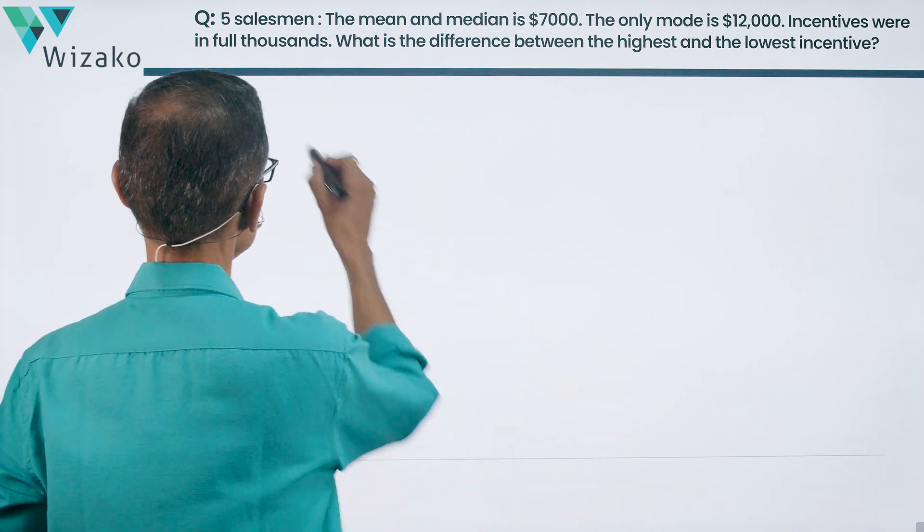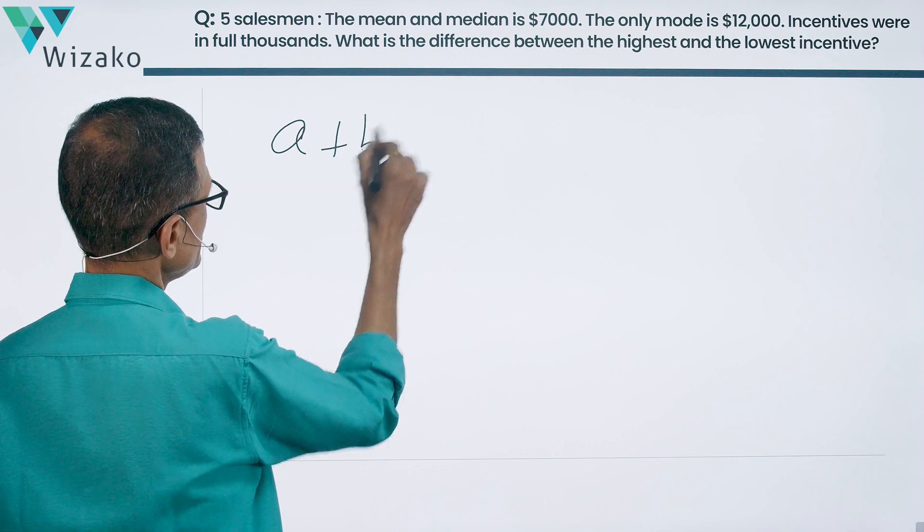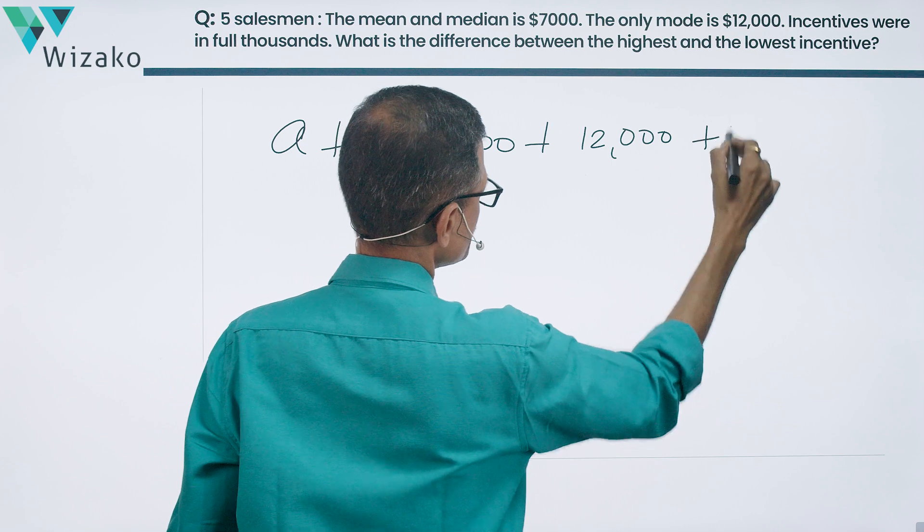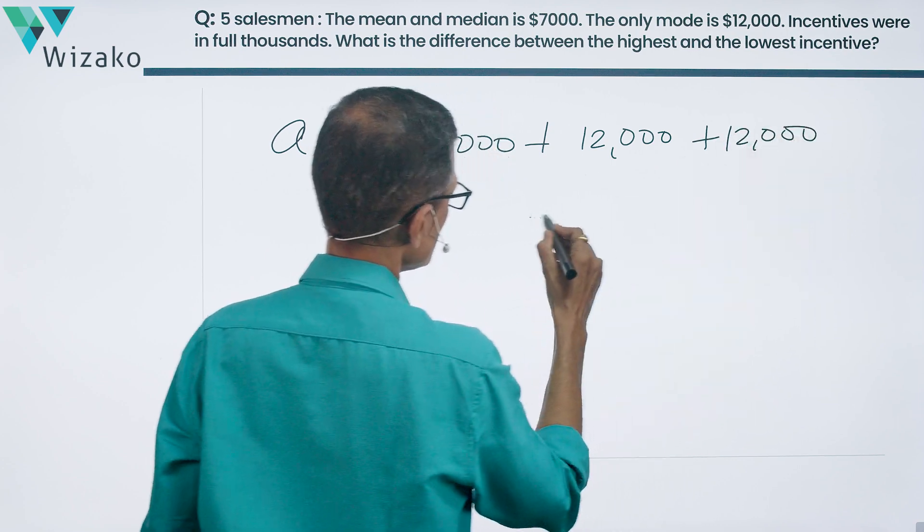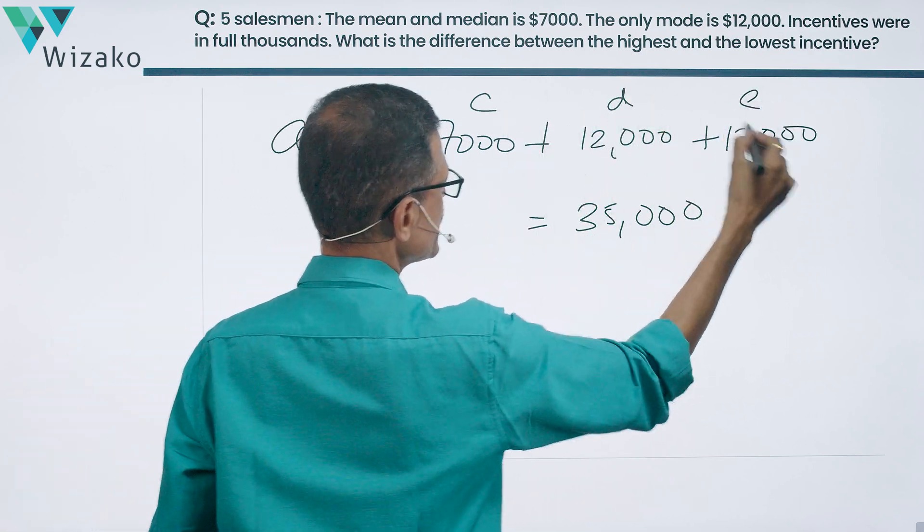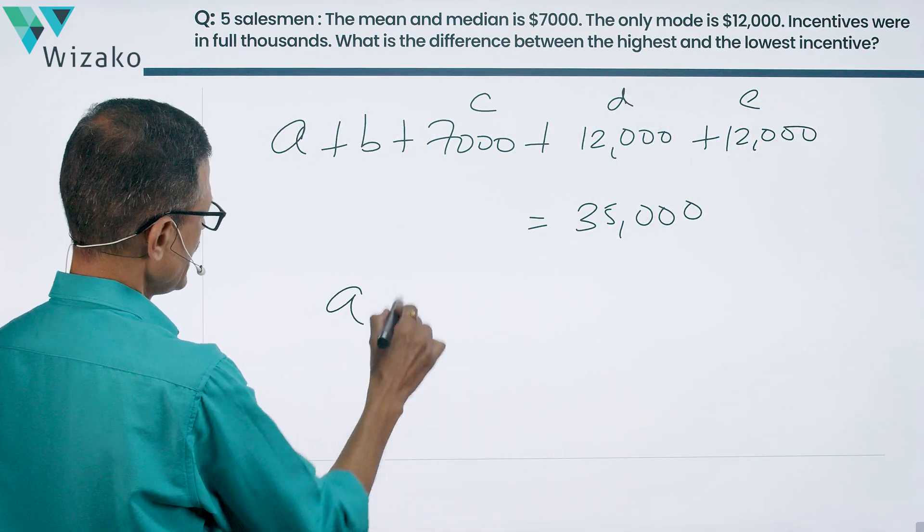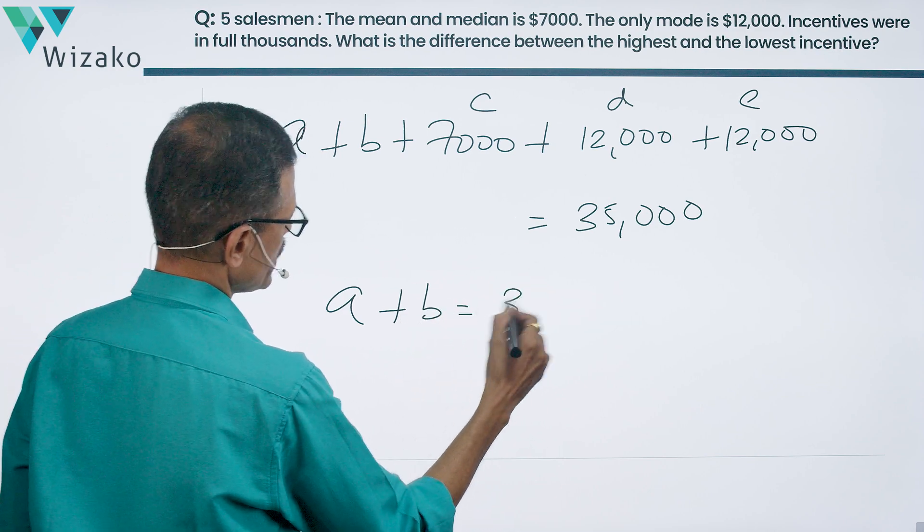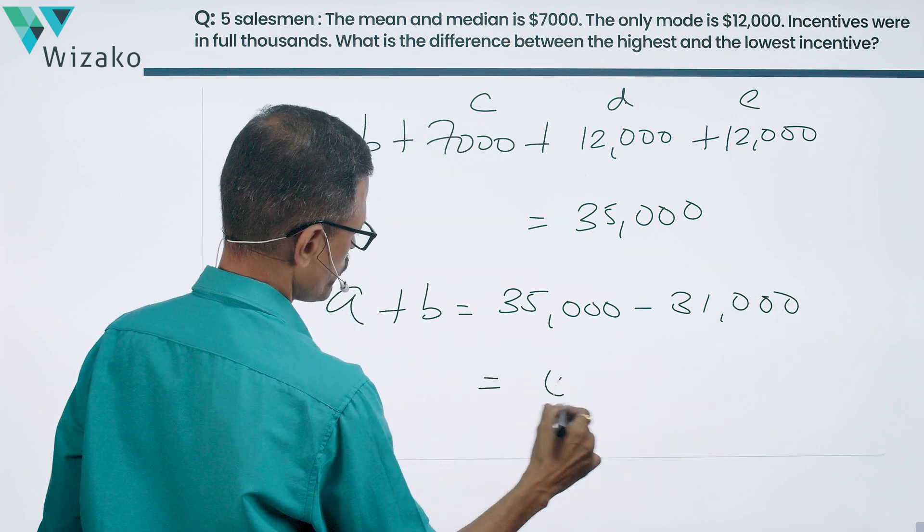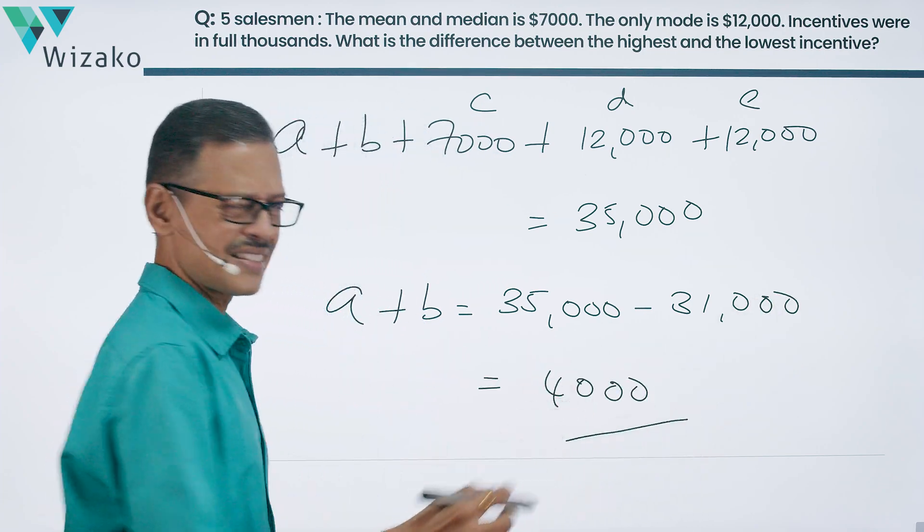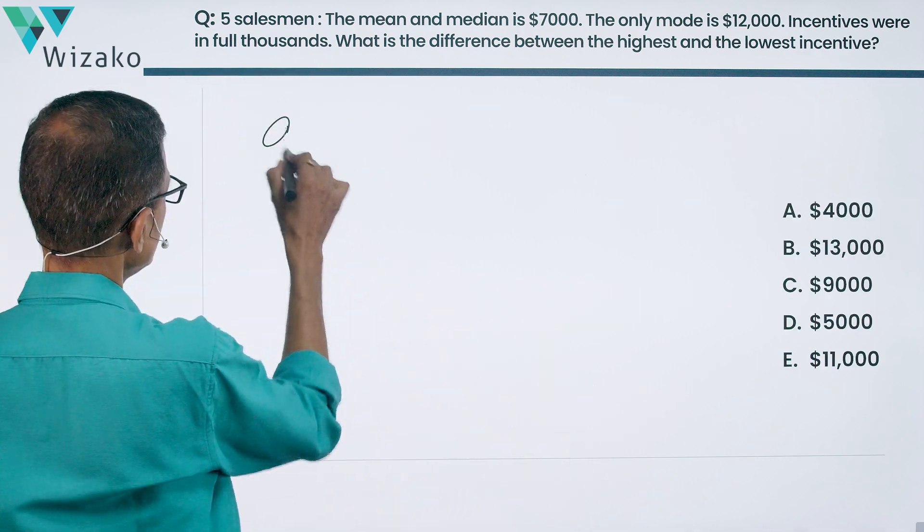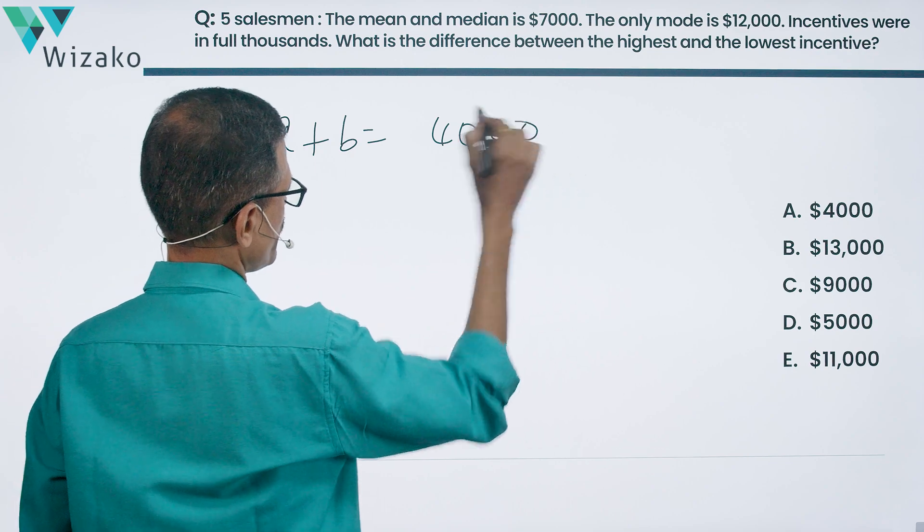Let's just plug that data here and then see what we have. So A plus B plus C is 7,000. D and E are each 12,000. This sum is equal to 35,000 is what we have. 24 plus 7, 31,000 gone. So A plus B is equal to 35,000 minus 31,000 which is equal to 4,000.